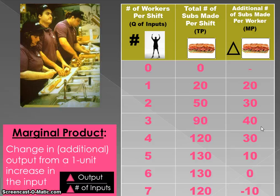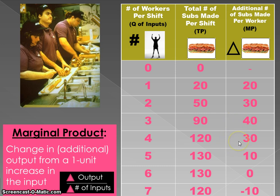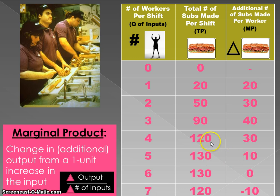The fourth worker still helps total product increase — it goes from 90 up to 120 — but they're adding less than the third worker did. So the fourth worker is where diminishing marginal product, or diminishing marginal returns, sets in. The fourth worker still increases total product, but by a smaller amount than the worker before. The fifth worker similarly still helps total product increase, just not by as much. The sixth worker adds nothing to total output, and the seventh worker causes total output to fall.